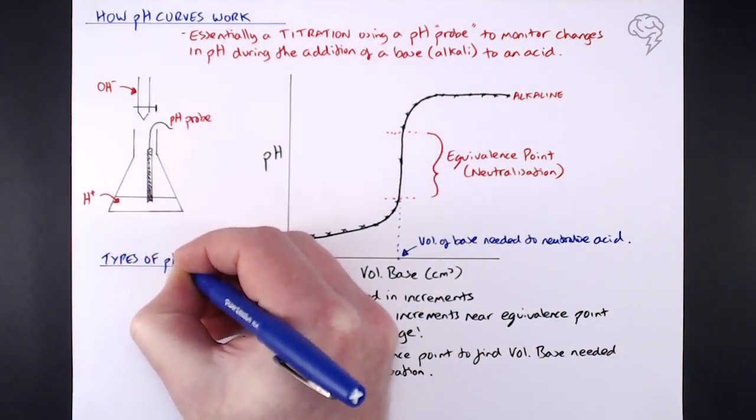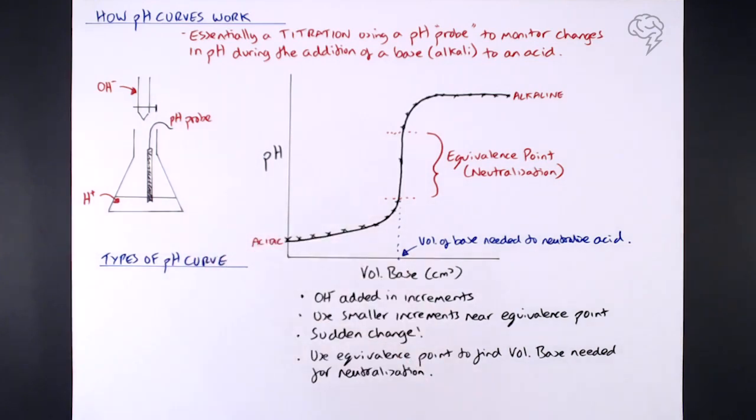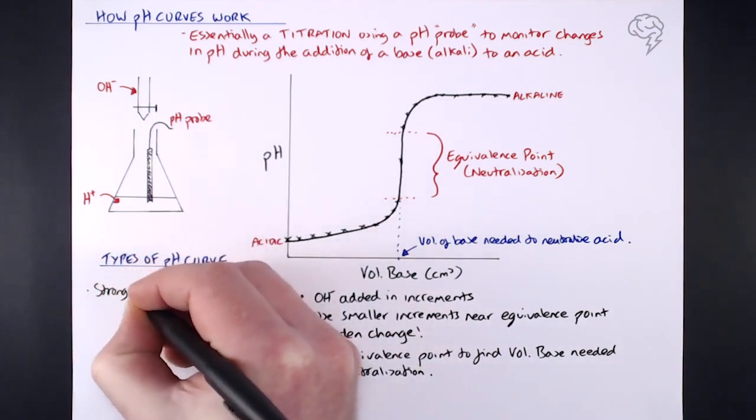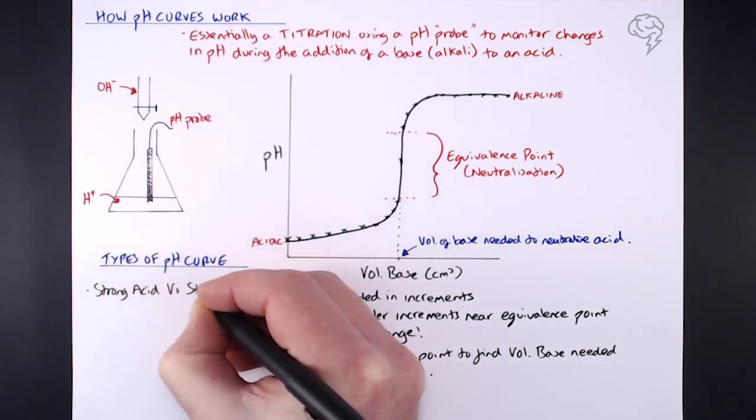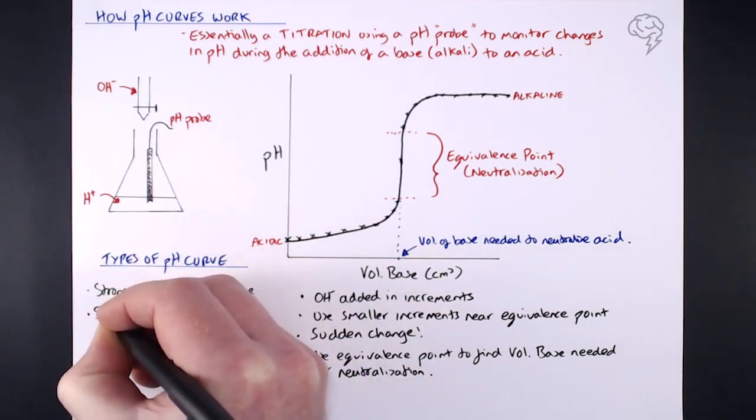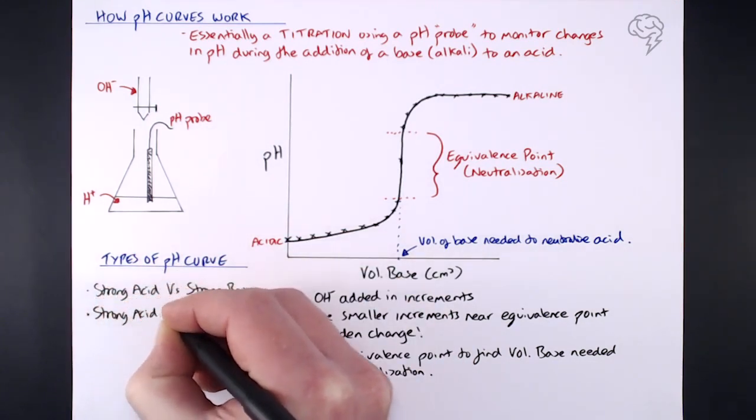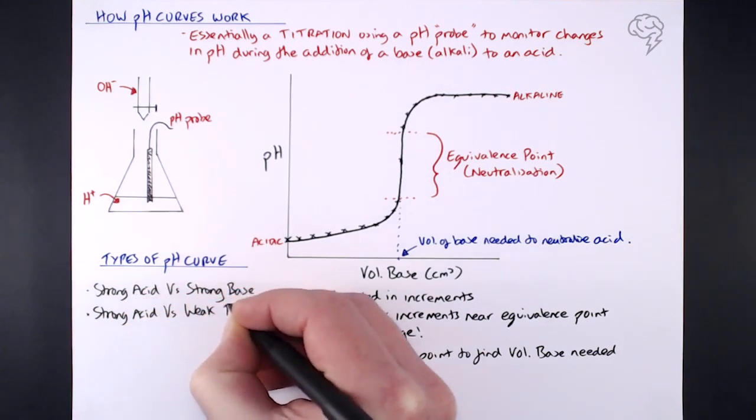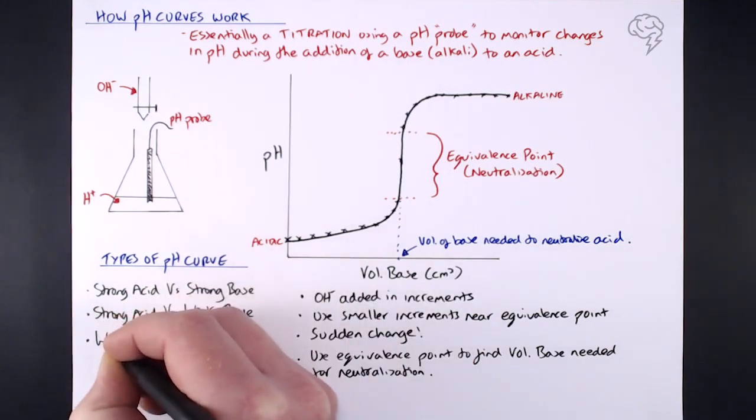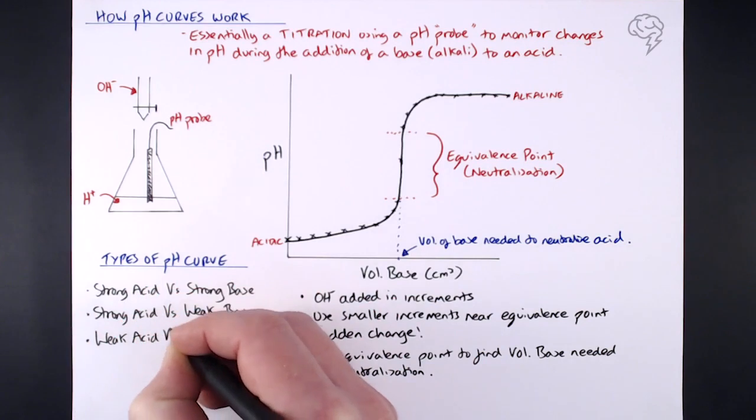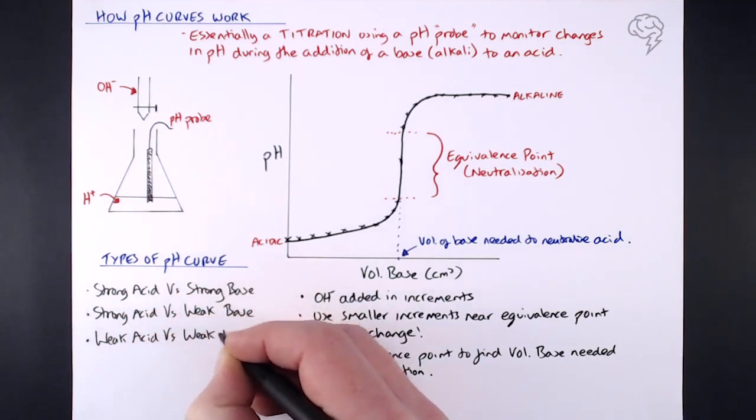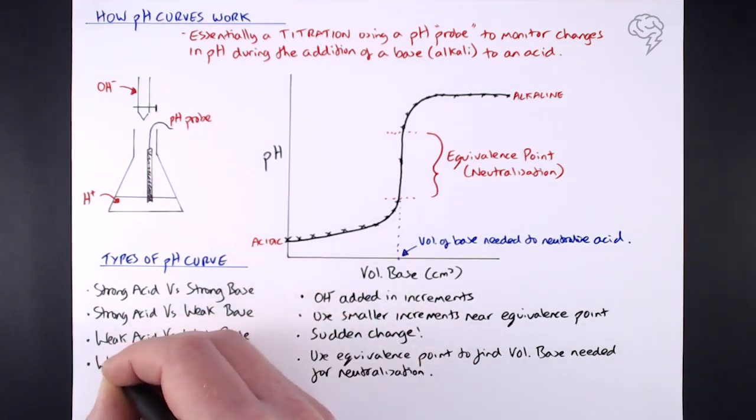These four types of pH curve that you need to be aware of are as follows: strong acid versus strong base - now that is typical of the one I've just drawn on the right-hand side. It's going to look different for a strong acid when you put it up against a weak base, different again where you've got a weak acid and a weak base, and of course we've got the other combination of a weak acid against a strong base.